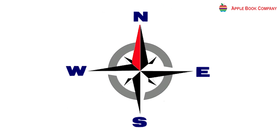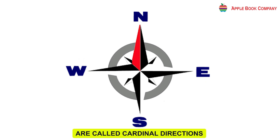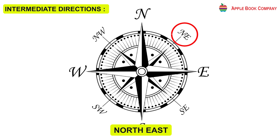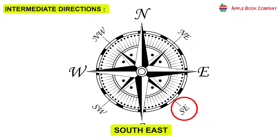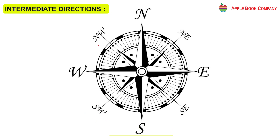The four directions — North, South, East, and West — are called cardinal directions. The four intermediate directions are Northeast (NE), Southeast (SE), Southwest (SW), and Northwest (NW).